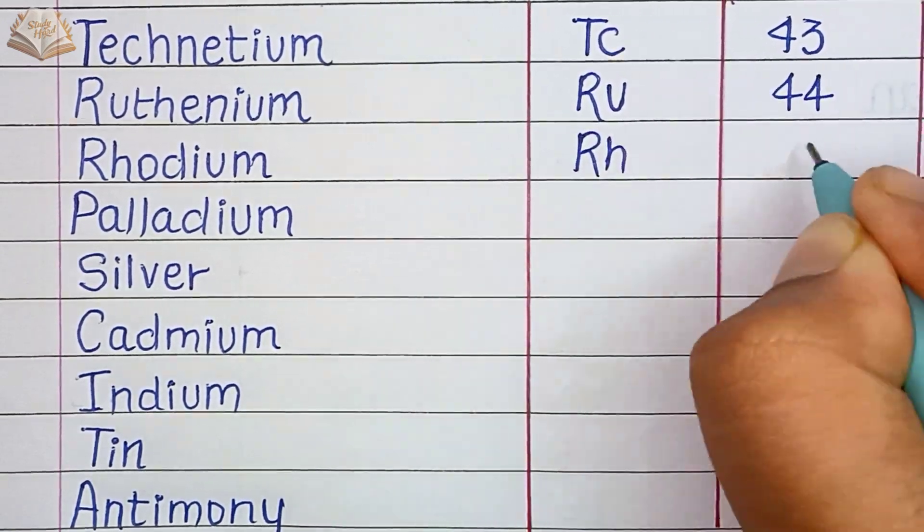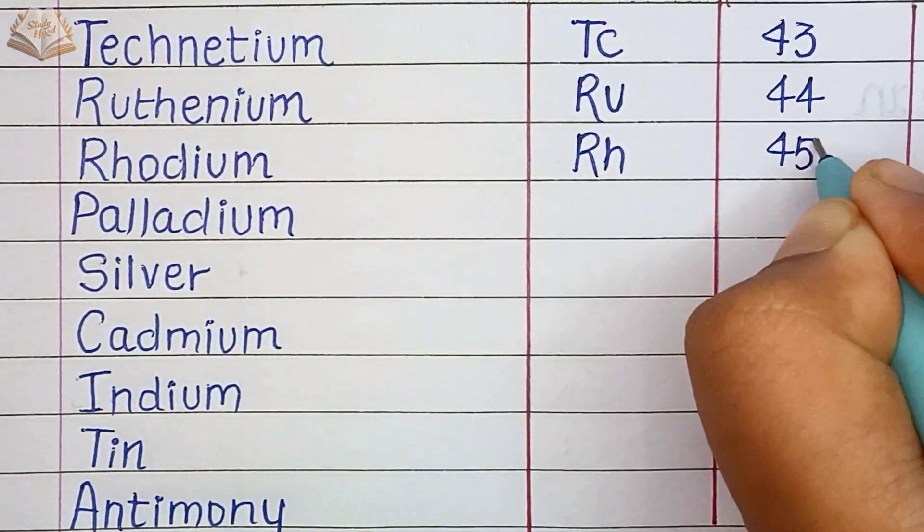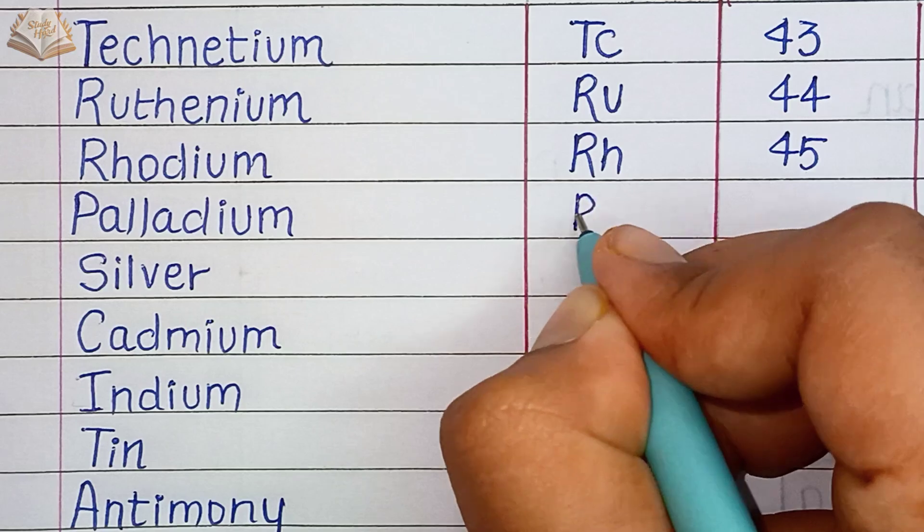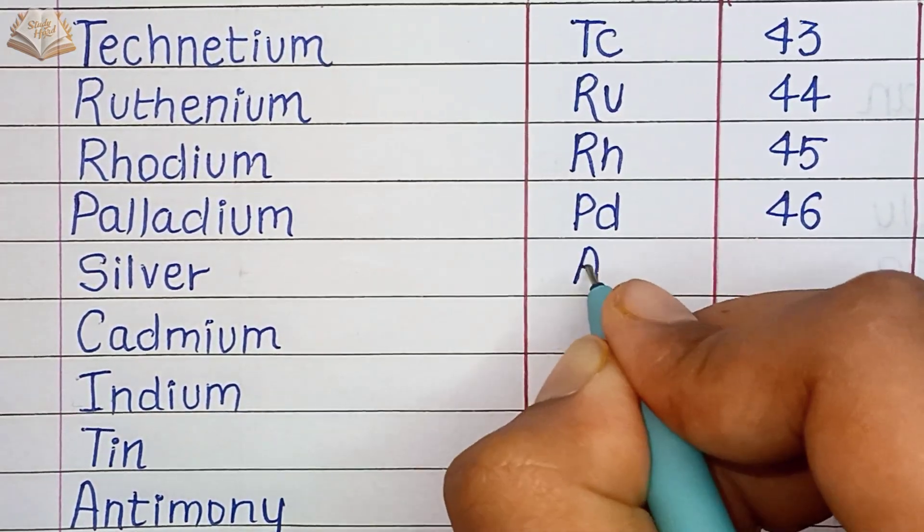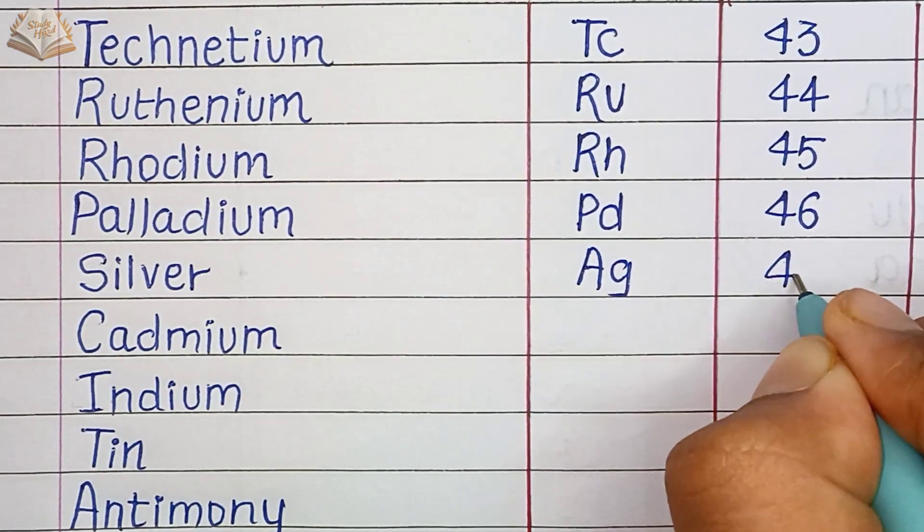Rhodium, RH, atomic number 45. Palladium, PD, atomic number 46. Silver, AG, atomic number 47.